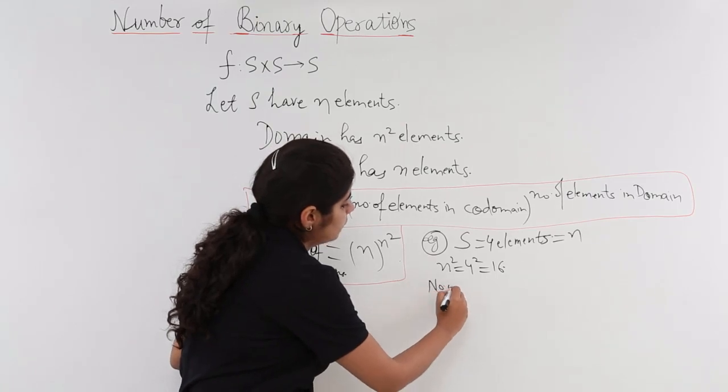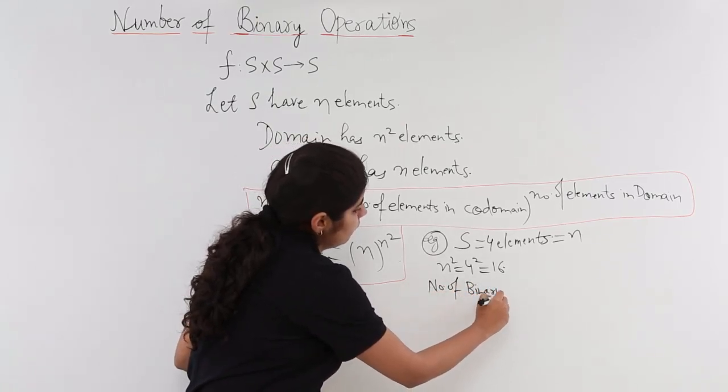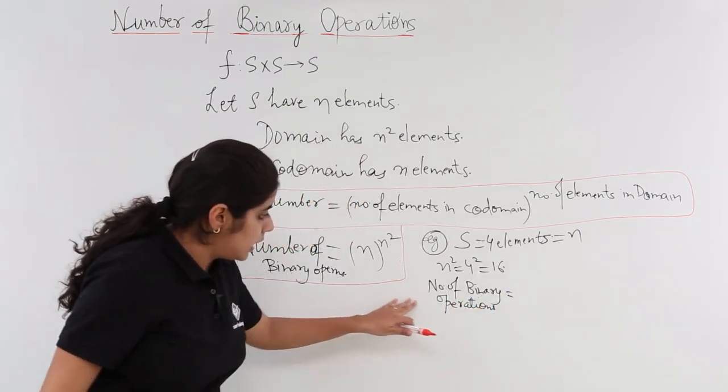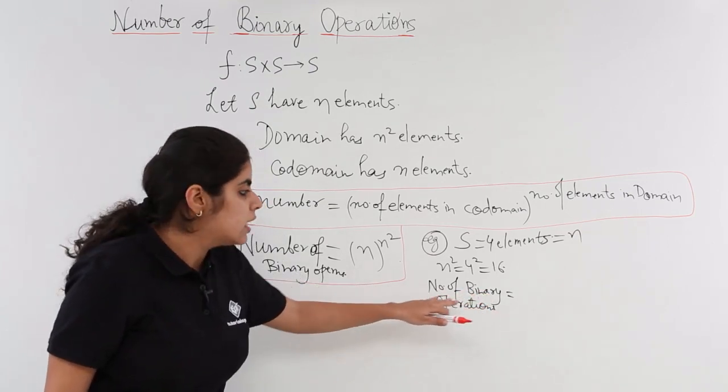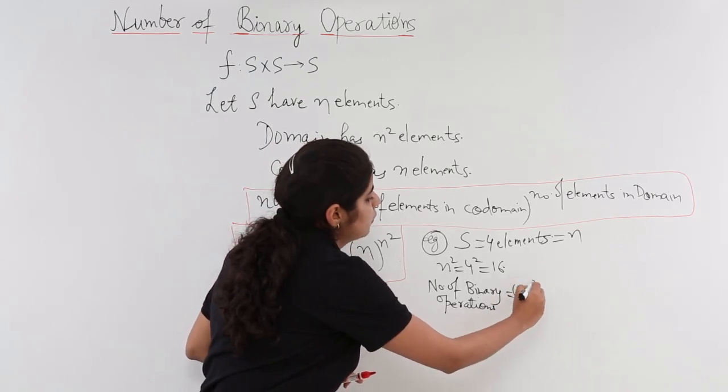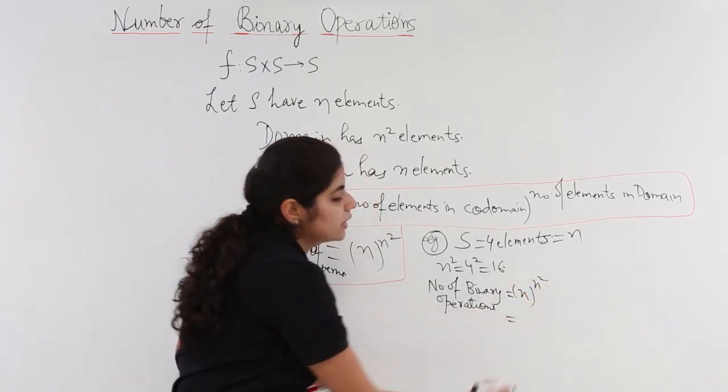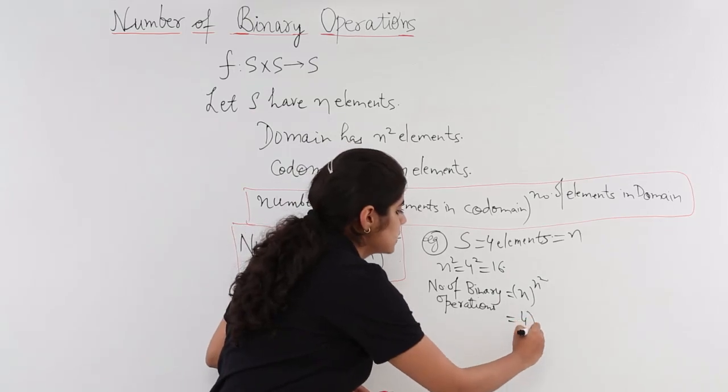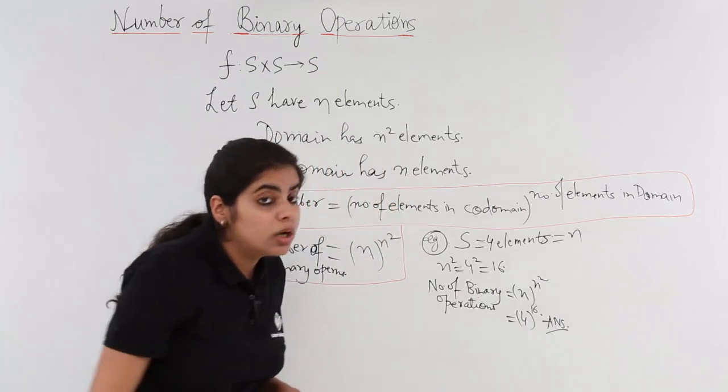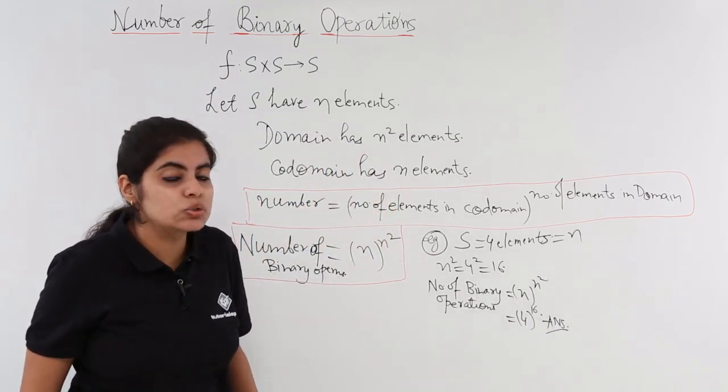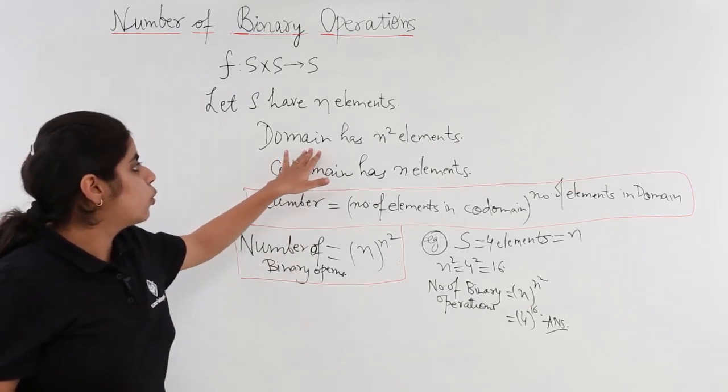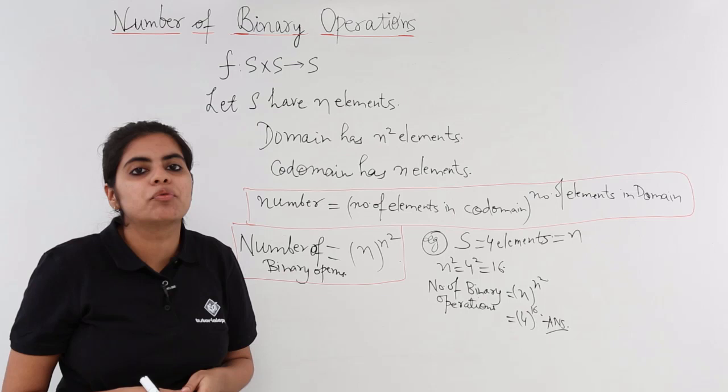What is the answer to the number of binary operations? Number of binary operations written very fastly, so you think the readability would be there. I am reading it again. That is why number of binary operations is equal to n to the power of n square. So what is n? n is 4. What is n square? 16. So 4 raised to the power 16 would be the answer to a question wherein you are asked to find the number of binary operations from a set wherein the domain has 16 elements and the codomain has 4 elements.